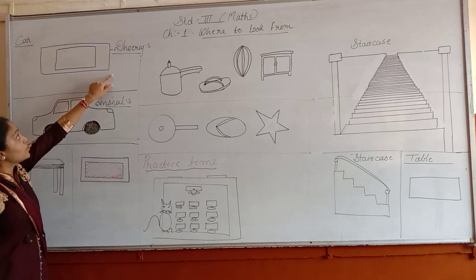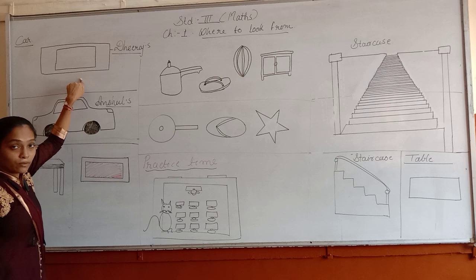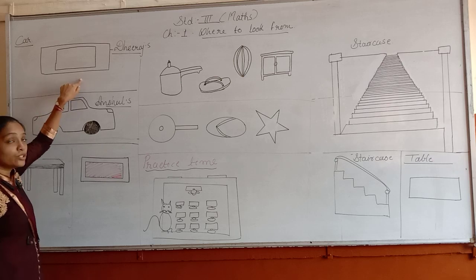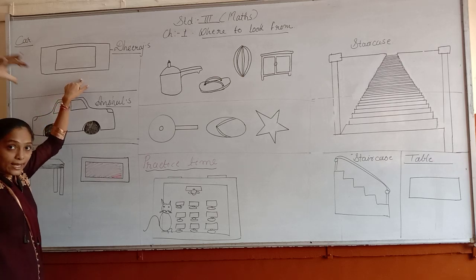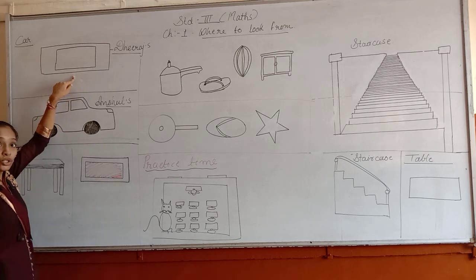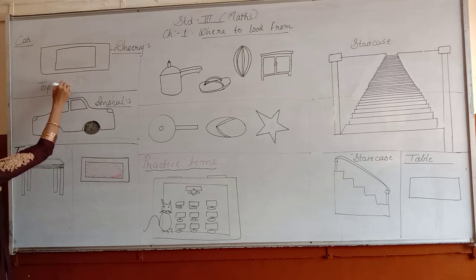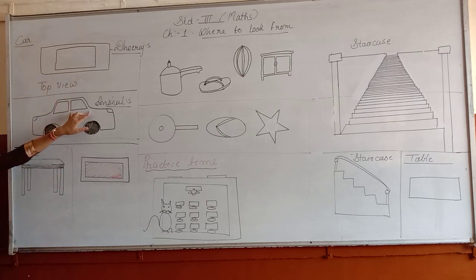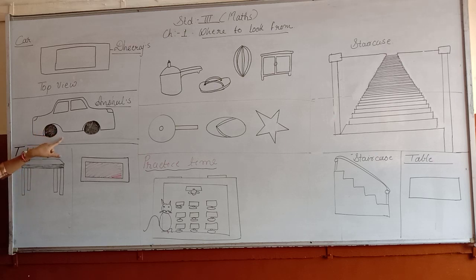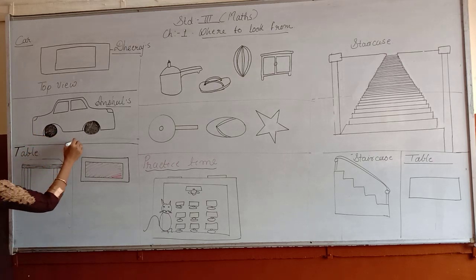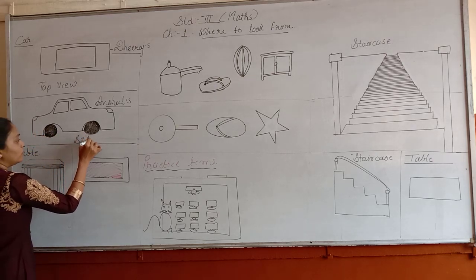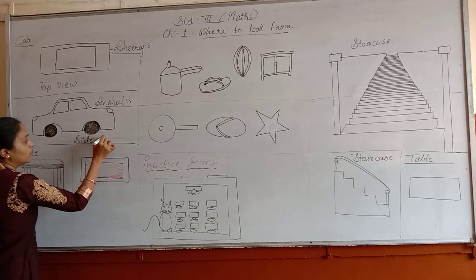Liraj saw the picture from the top — from the terrace. So this is the top view of a car. Which view is this? Top view of a car. And Anshul's picture is from the side, so this is the side view of a car. Which view is this? Side view of a car.